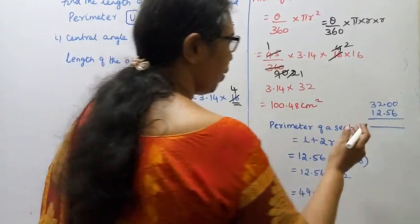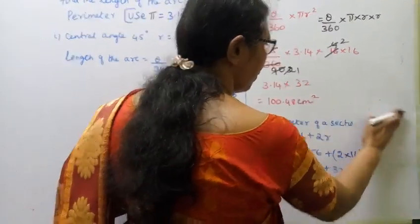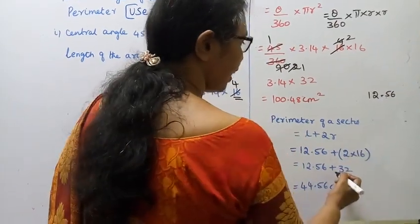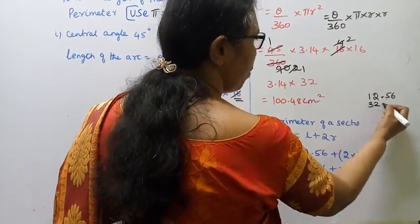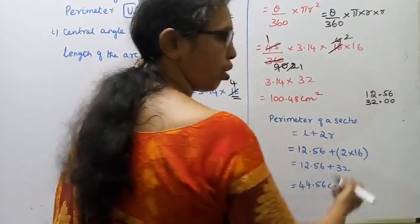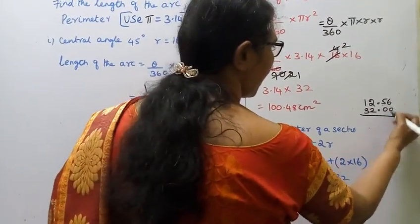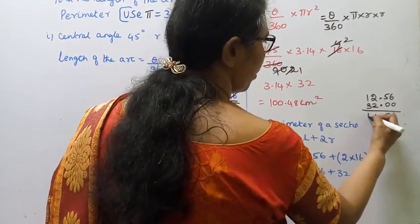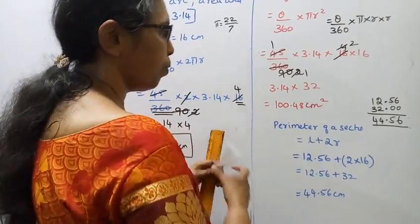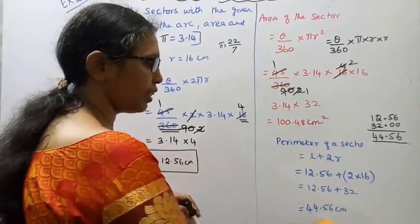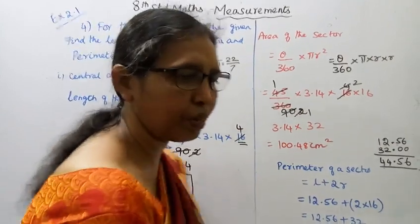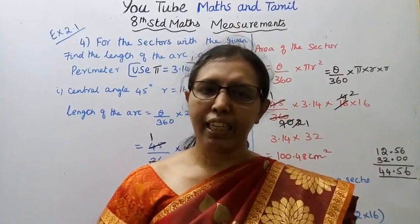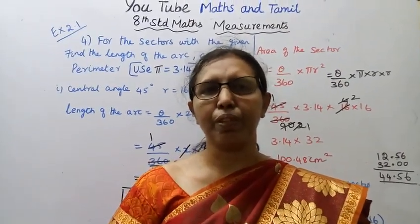So the answers are: length of arc 12.56, area 100.48, and perimeter 44.56 centimeters. Practice with your child. If this channel helps you get 100 marks, please like, subscribe, and click on the notification bell.